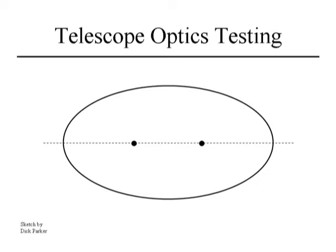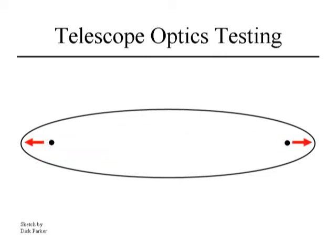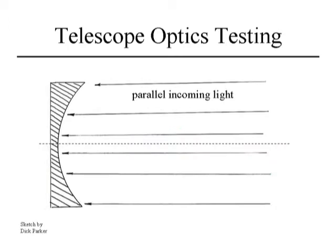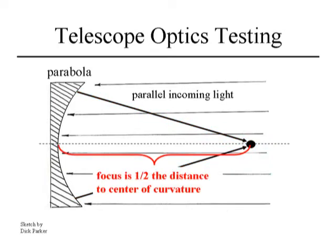If we keep stretching the ellipse, the foci get farther and farther apart. Eventually we reach a unique case where the foci are an infinite distance apart, and the light from one foci becomes a parallel bundle — this surface is a parabola. The ellipse just stretches toward a parabola until the other focus is at infinity. A parabola means that light coming from a parallel source focuses to one common point, and that focus is at half the distance of what would be the center of curvature of the closest approximating sphere.